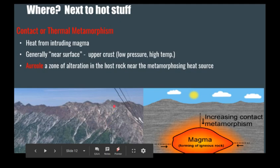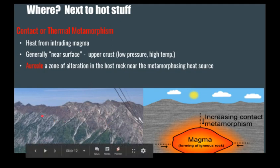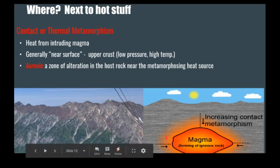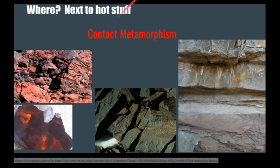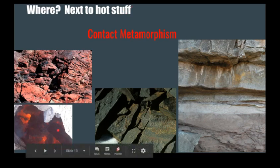Contact metamorphism can be caused by heat from intruding magma. Here is a picture of the Little Cottonwood stock and the host rock, the Big Cottonwood Formation. This reddish rock has been metamorphosed or altered by the heat of the large granite pluton that existed below it, and it forms a region around the pluton of altered metamorphosed rock from this contact metamorphism.